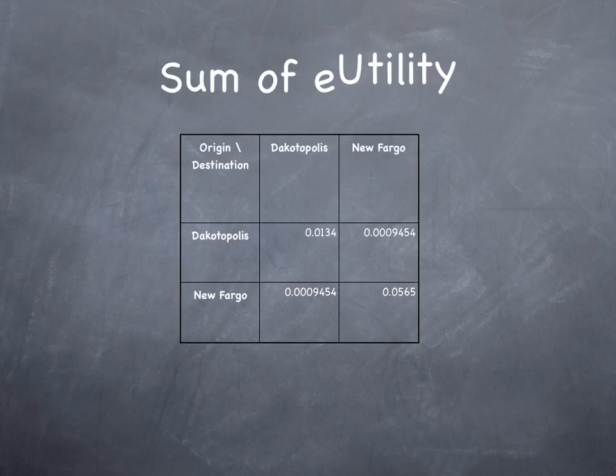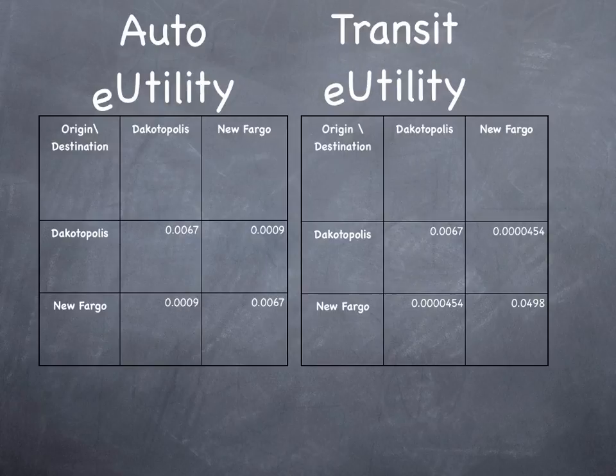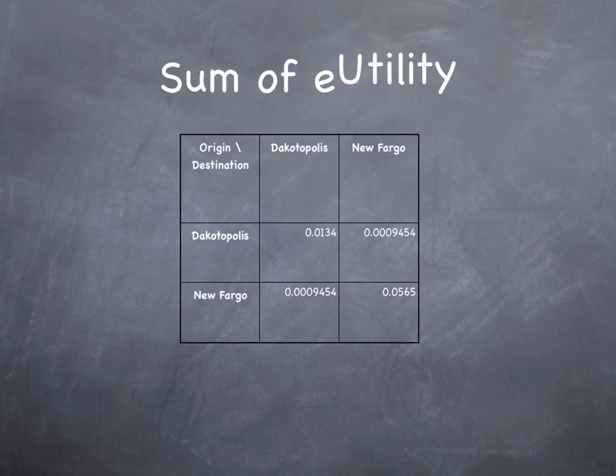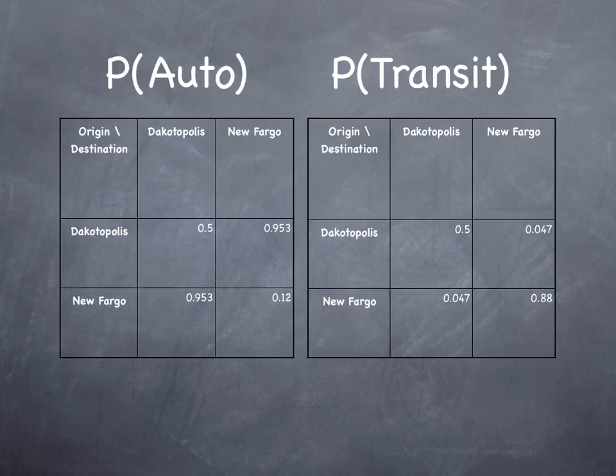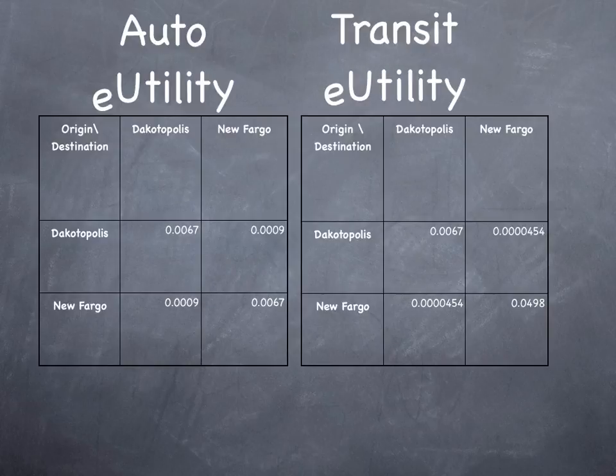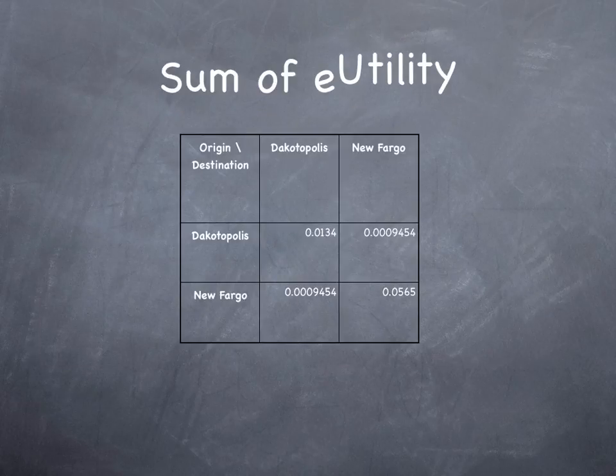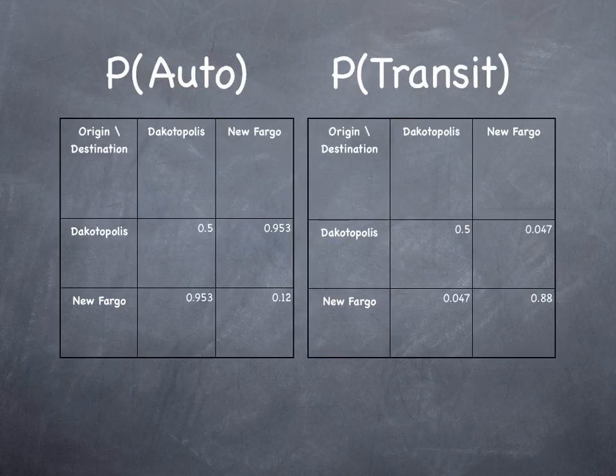Now, to solve the probability of taking auto, we're simply dividing the exponentiated utility by auto by the sum of the exponentiated utilities for all modes. We're taking 0.0067 divided by 0.0134, giving us 0.5. Similarly, for Dakotopolis to New Fargo by auto, we take 0.0009 divided by 0.0009454 and get 0.953, or 95.3%. We do this for all four origin-destination pairs for each mode to get the probabilities of taking each mode.